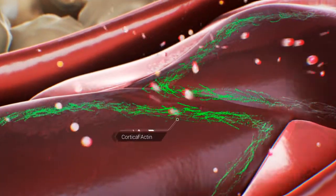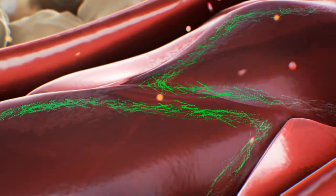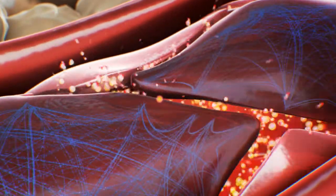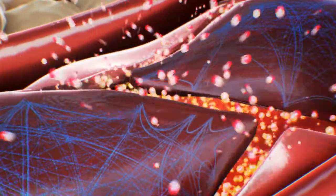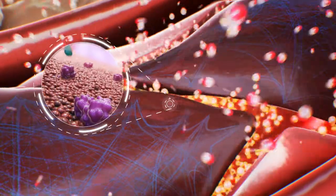Permeability is regulated by the tightness of endothelial cell-cell junctions, at least in part through switching between radial and cortical actin.